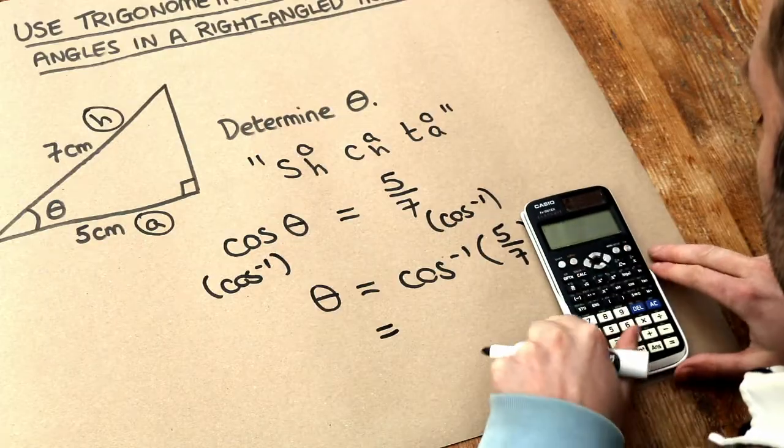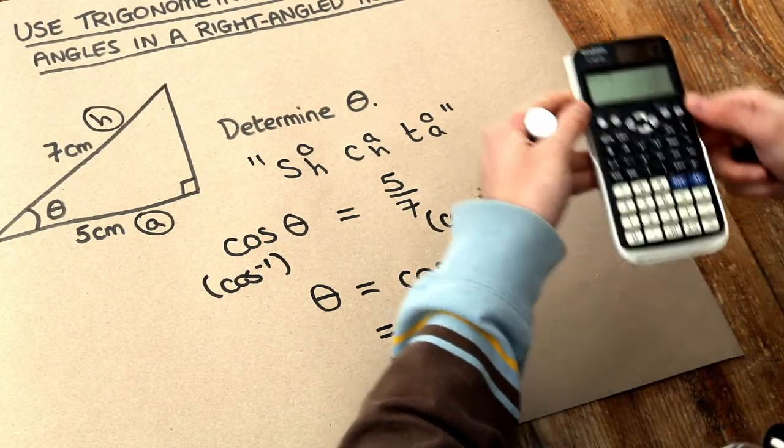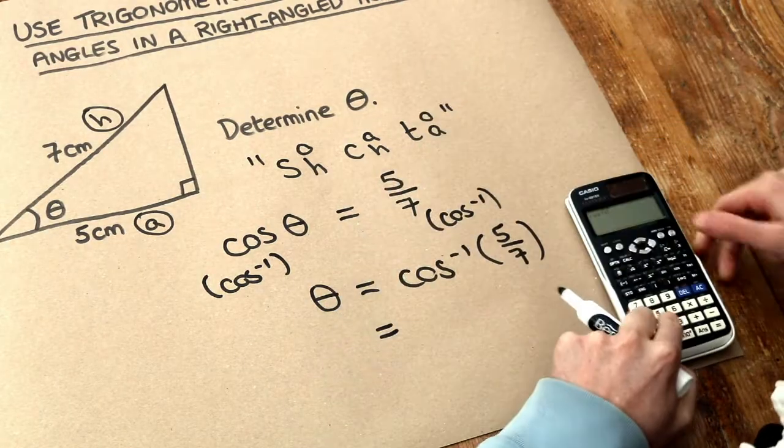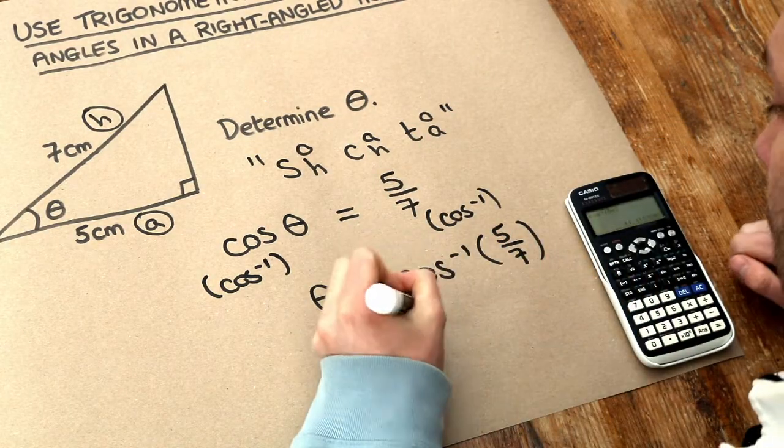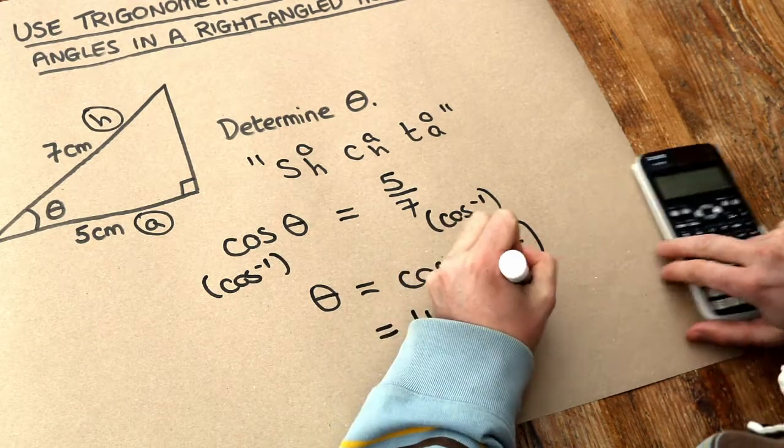You just need to know how to use it. So you do shift cos, inverse cos, and it will appear on your calculator as 5 over 7. That gives you an angle of 44.4 degrees to three significant figures.